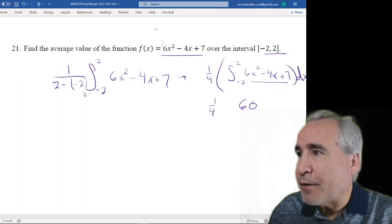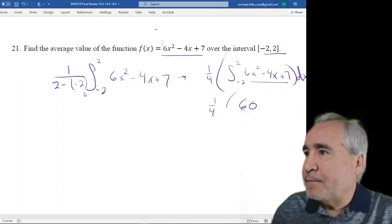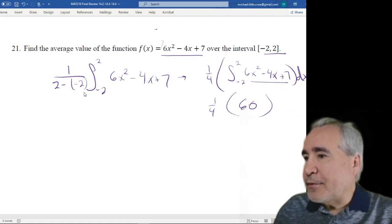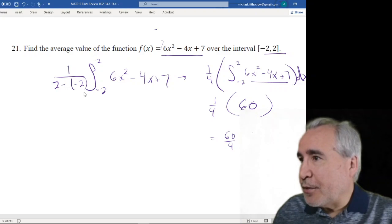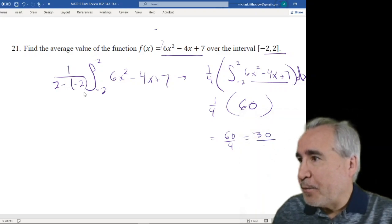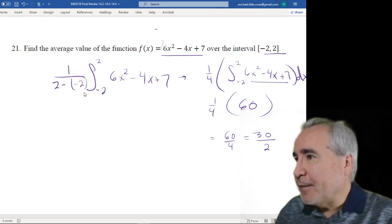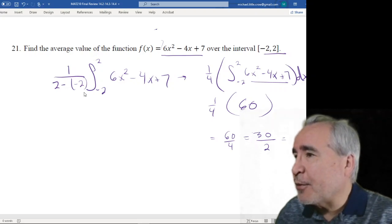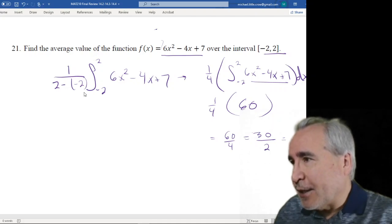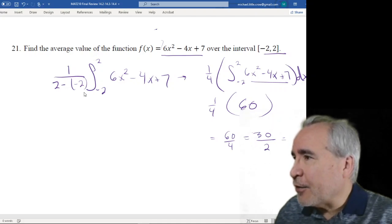We have this 1 fourth out here. 1 fourth times 60 is 60 over 4. 2 goes into both of those. 2 goes into 63. So you get 30 over 2. Which is 15. 4 goes into 60. I should have known that one. See, sometimes if you don't recognize, I didn't know that 4 would go in there evenly. I got to this and I say, oh, 30 divided by 2. That's just going to be 15.